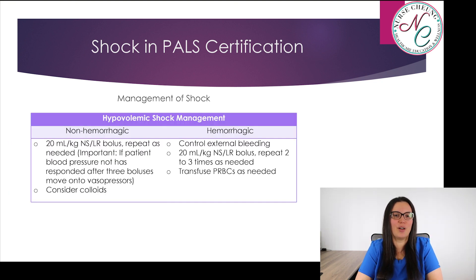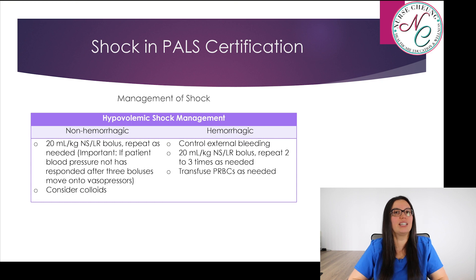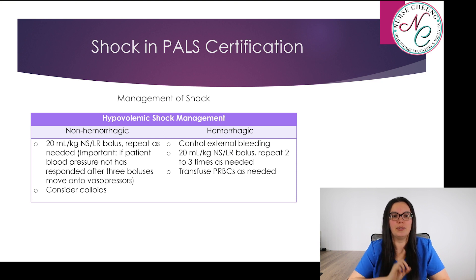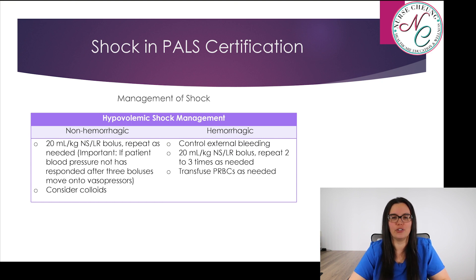Let's look at the management of hypovolemic shock through either non-hemorrhagic or hemorrhagic causes. For non-hemorrhagic causes, we're going to give 20 mLs per kilogram of normal saline or lactated ringers, repeating as needed. If the patient's blood pressure does not respond after three boluses, we move on to vasopressors. We may also want to consider colloids for these patients.